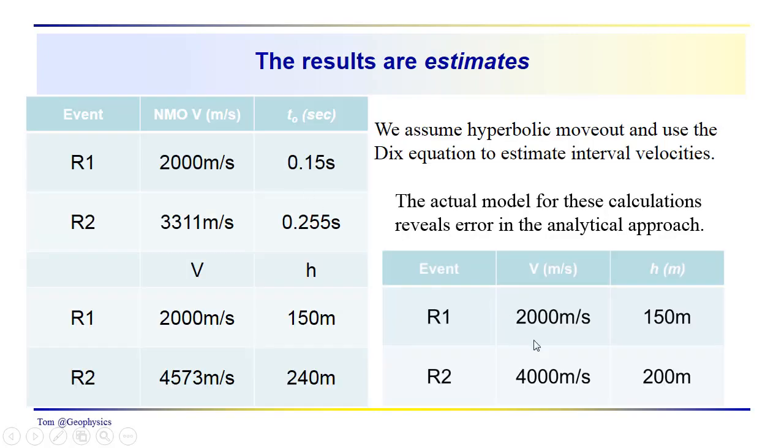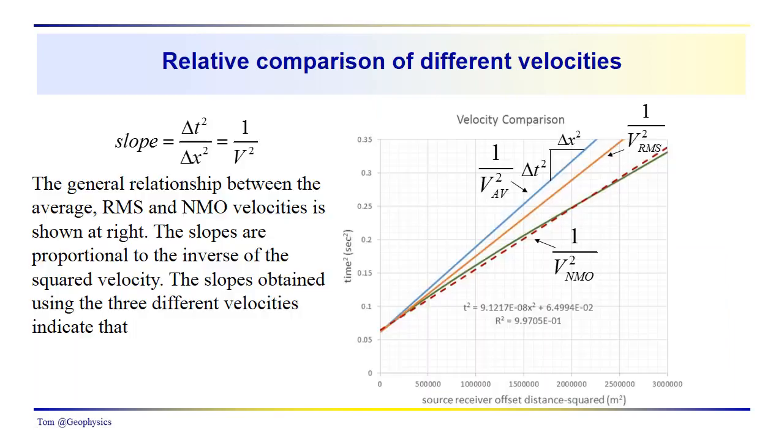You can't get the average velocity from these two velocities because you'd be off. You can't get the RMS velocity from these two velocities because you would, again, be off. The RMS and the average velocities come from the actual velocities, and unless you have some log data or some other source of information, unless you know this to begin with, you are not going to be able to calculate the actual average and RMS velocity.